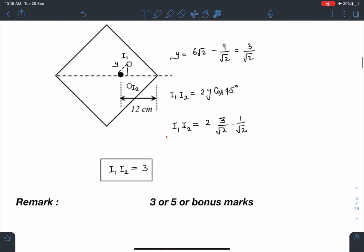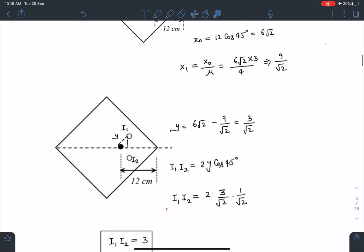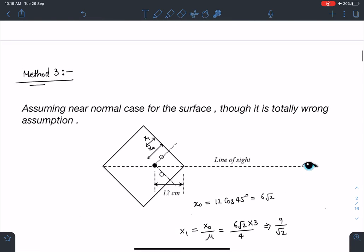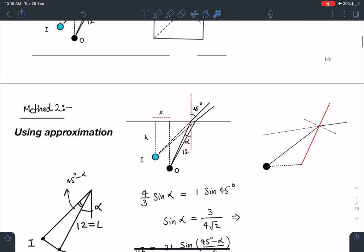So my remark about this problem is either answer maybe 3 or can be 5 or it can be a bonus mark question also. So in various coaching some people have predicted answer as 2 or 8 also. So it's a very debatable question and we will see what responses JEE people are going to take about this problem.